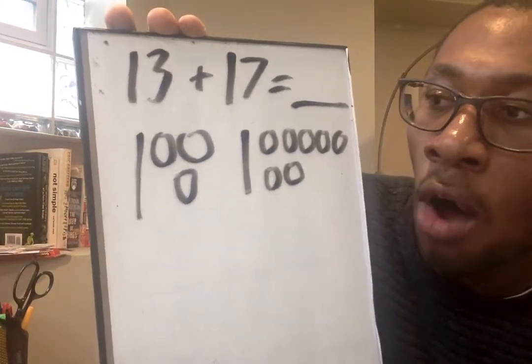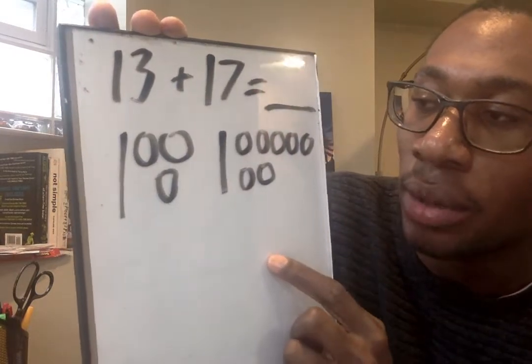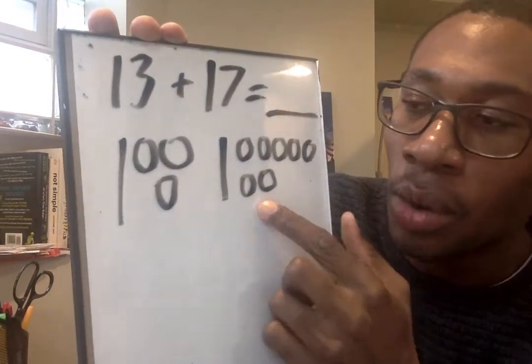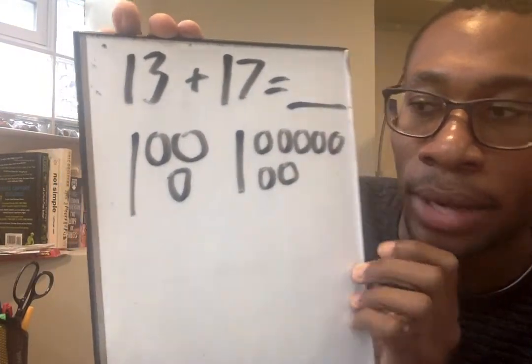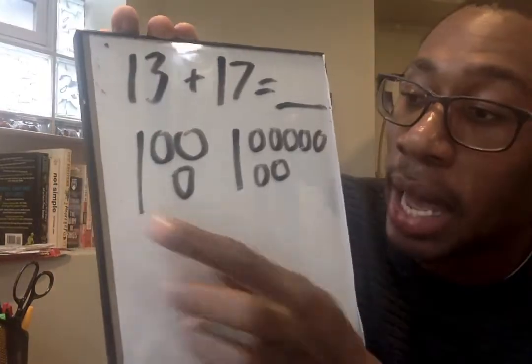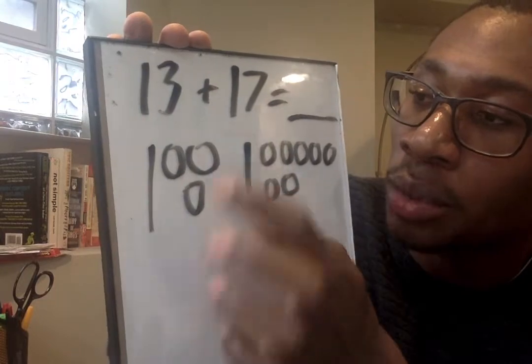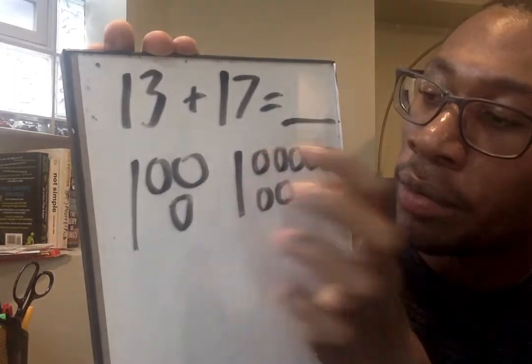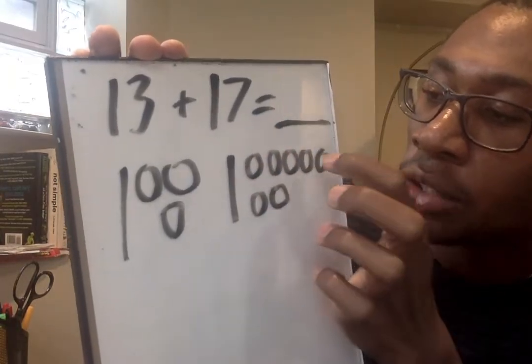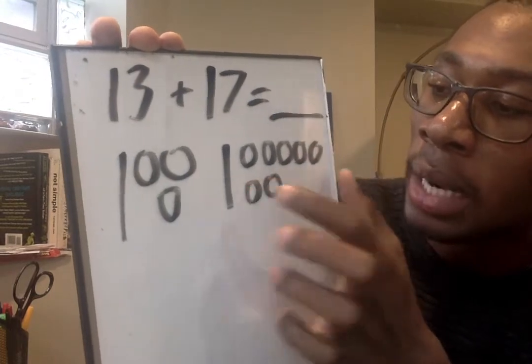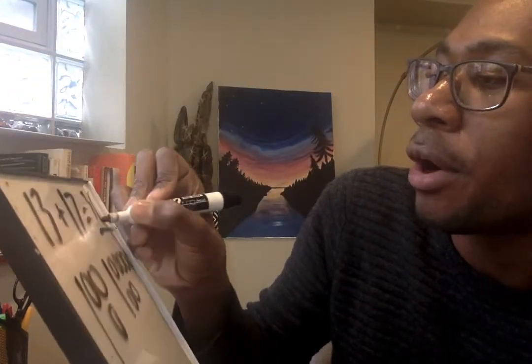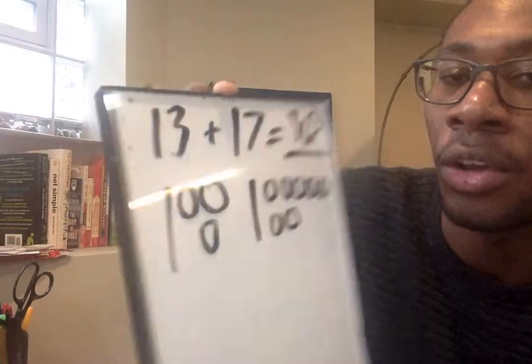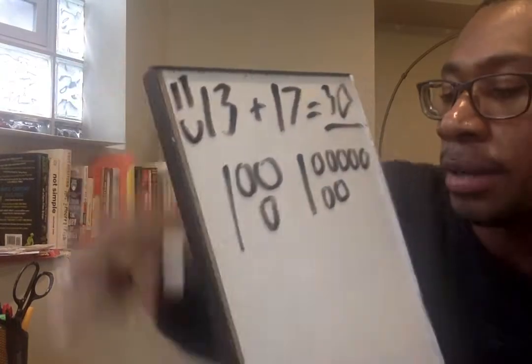So as I'm drawing my pictures, I want to make sure that I draw them neat and carefully so when I go to count them, I get the right answer. So let's count together to see if we got the right answer, or you got the right answer. 10, 20, 21, 22, 23, 24, 25, 26, 27, 28, 29, 30. If you got 30 as this answer, you can go ahead and put another smiley face on your paper. Nice job so far, friends.